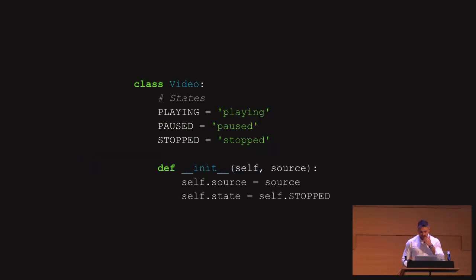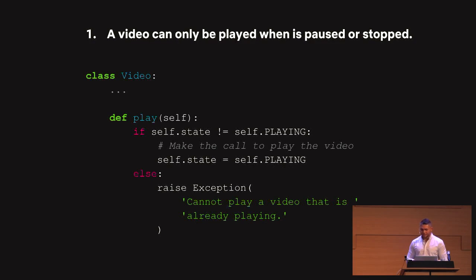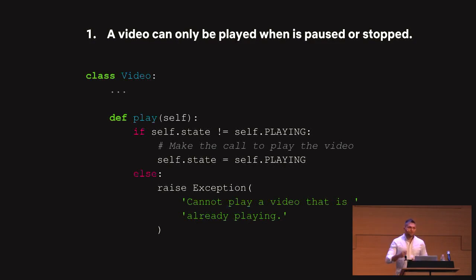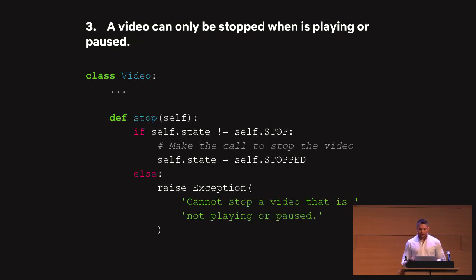Here's a different approach: you can have a video class where you define some constants for your states, and then instead of having boolean flags, you have a single state attribute, initialized to stop because the video is not playing when you create the instance. The code actually didn't change much — instead of checking booleans, we continue checking constants. But we still keep raising exceptions in all cases and we still make assumptions. The moment we introduce a new rule or a new state, this code is going to be broken.